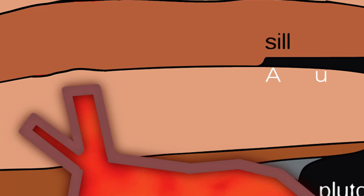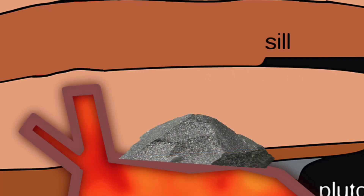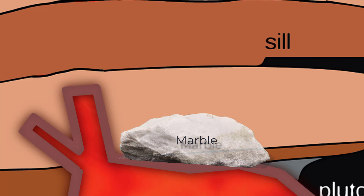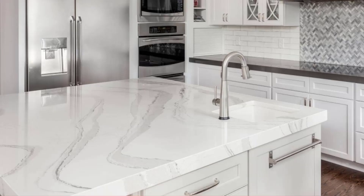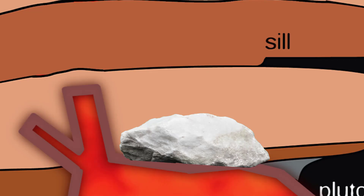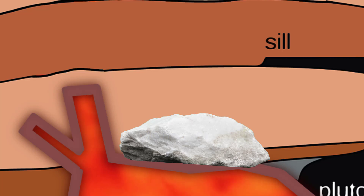When common limestone is baked, the calcite crystals get welded together, producing the metamorphic rock marble, which, when polished, is used to decorate home interiors — especially in the kitchen and the bathroom — and you probably have some of that rock in your home. Importantly, the calcite minerals don't change into other minerals as often occurs in the foliated metamorphic rocks; they are the same minerals, they're just welded together.